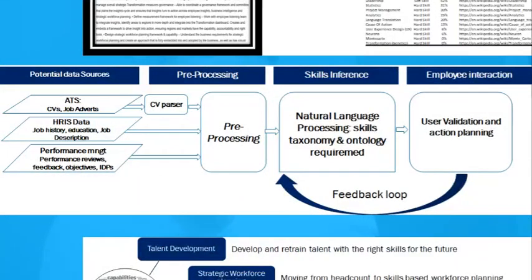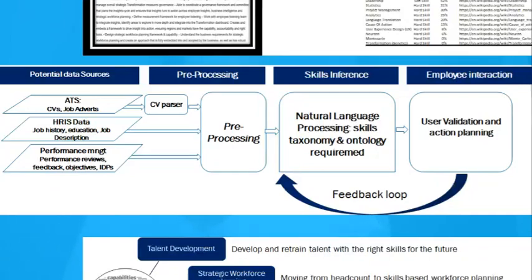How is it doing this? It's very simple. You take any data that describes what people do — and in HR we have a ton of it that we don't really leverage. Look in your applicant tracking system: there are CVs and job adverts that literally describe exactly what skills people have and what the role entails. In the HR system we've got job descriptions, job history, and education — so you can see what roles people used to do and what they studied at university. Then you've got performance management data: performance reviews, objectives, development objectives, and feedback. Data describing what people do and how good they are at it is absolute gold.